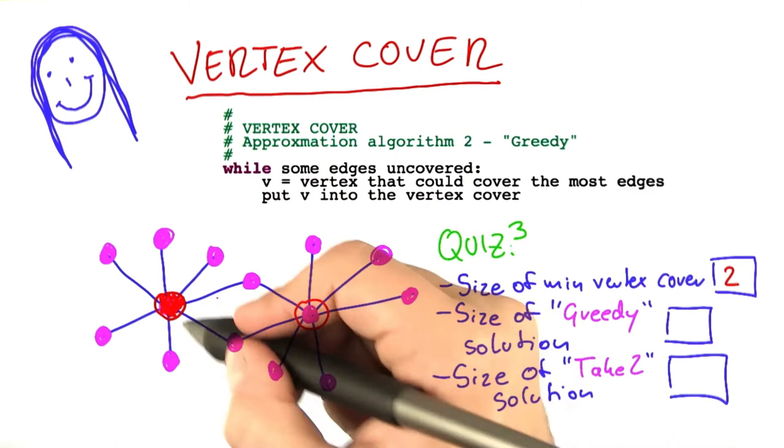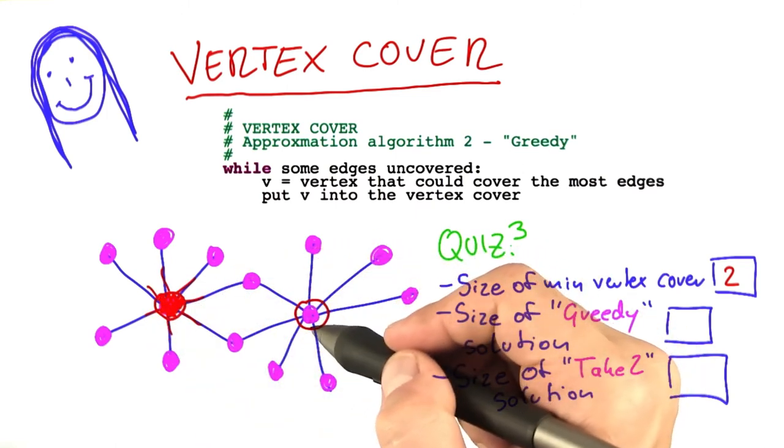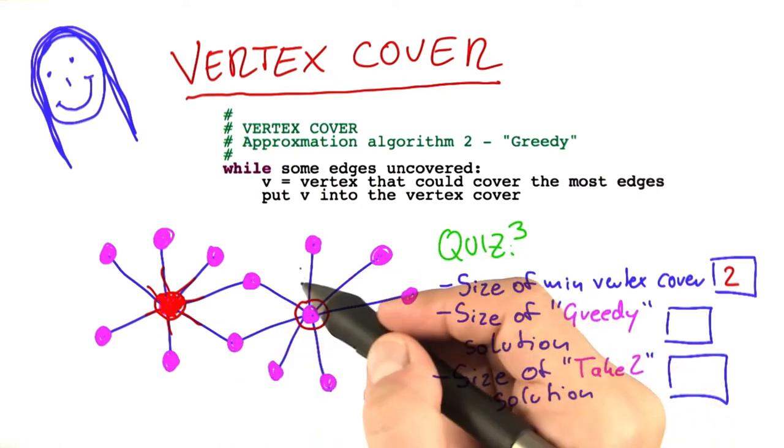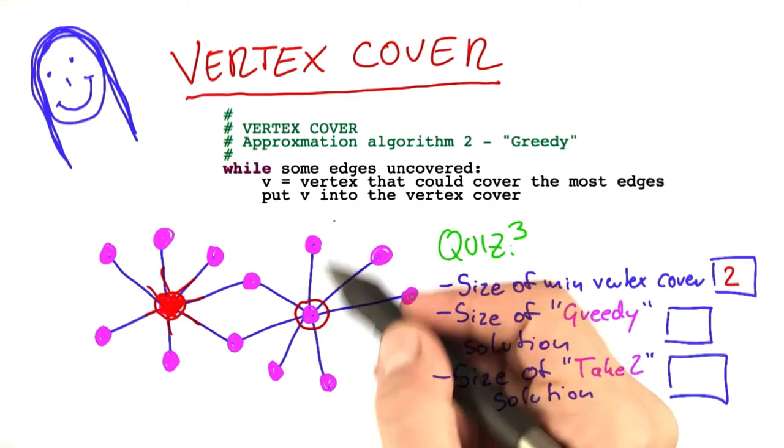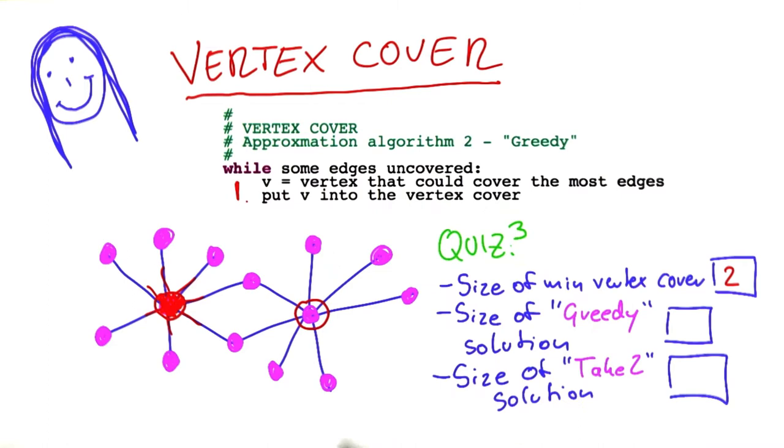And then in the next round, all of these edges here are already covered. So it will say: here's another vertex I can use to cover 7 edges. Let's take that one, because all of the other vertices can just cover 2 or 1 edge. So after executing this loop just twice, the algorithm is already done, and it has even found an optimum solution.